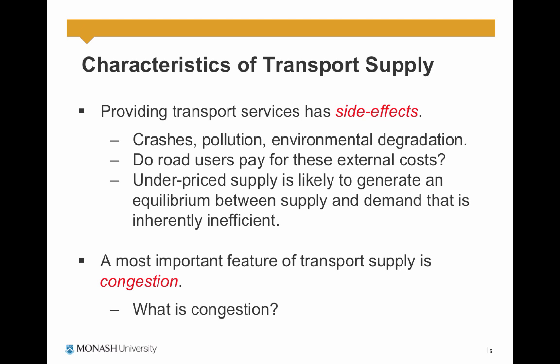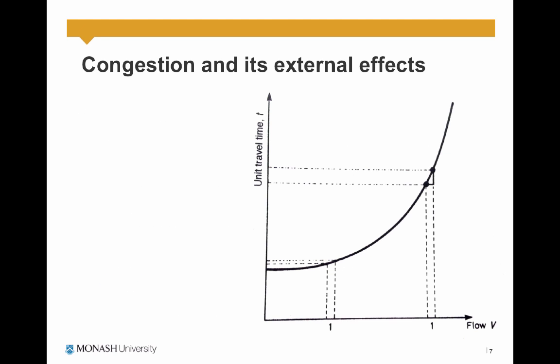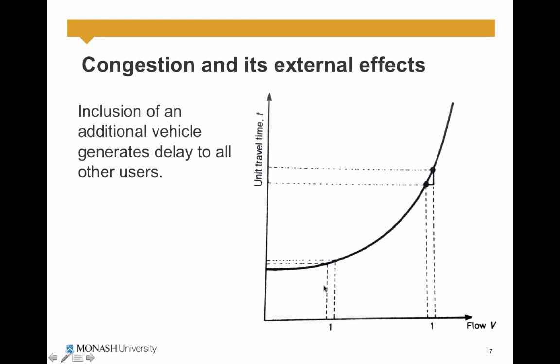One of the most important features of transport supply is congestion. But what is congestion? Congestion is usually defined as demand exceeding capacity. We can represent congestion visually through a curve where the x-axis is flow, or the number of users in the system, and the y-axis is travel time or travel cost. As the number of users or flow increases, the travel time increases — things get congested. You can see how an inclusion of an additional vehicle generates delay to all other users, not just the additional vehicle itself.